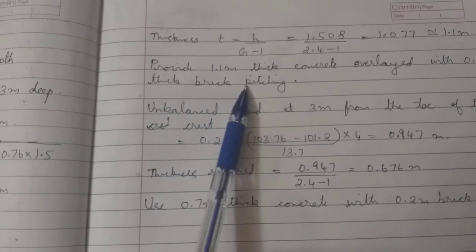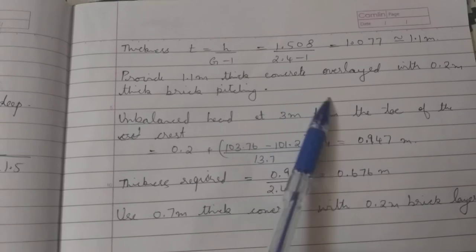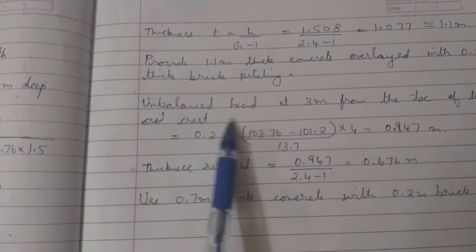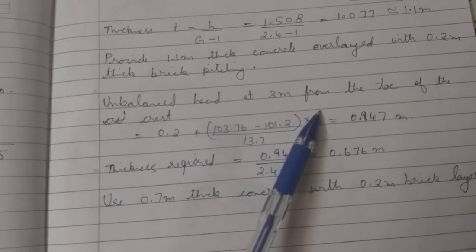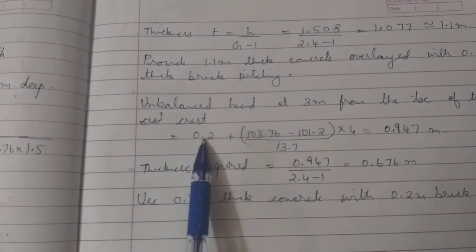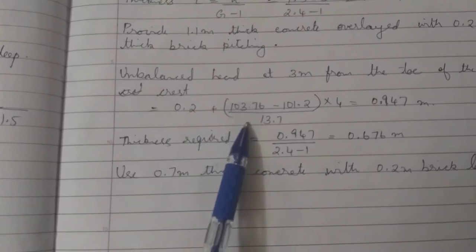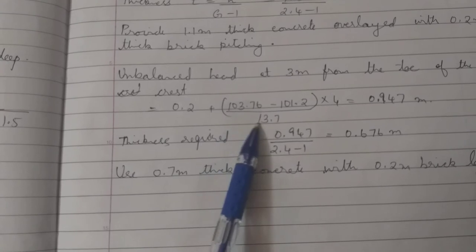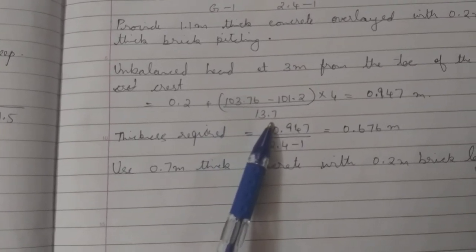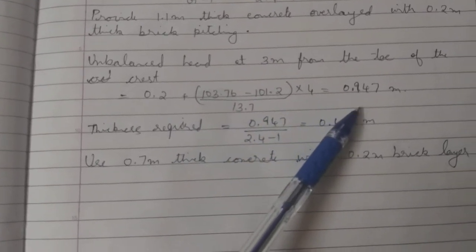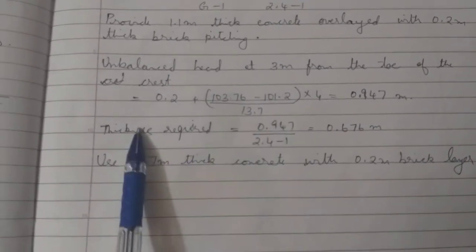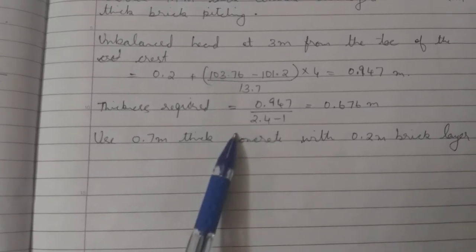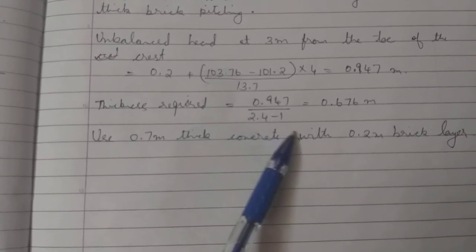Provide 1.1 meter thick concrete overlaid with 0.2 meter thick brick pitching. Unbalanced head at 3 meter from the toe of the crest is equal to 0.2 plus (103.76 minus 101.2) divided by 13.7 multiplied by 4, which equals 0.947 meters.